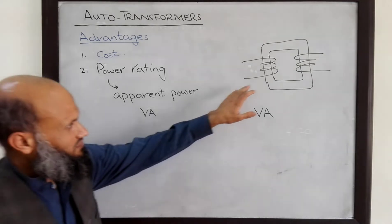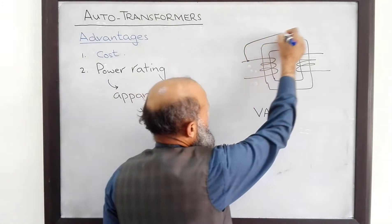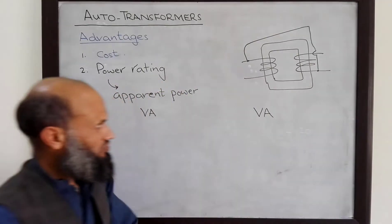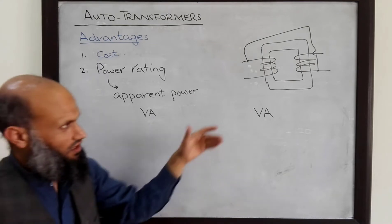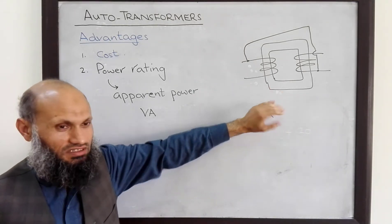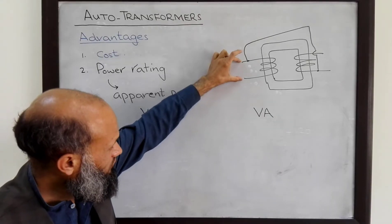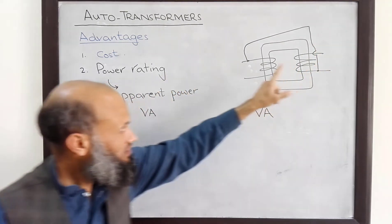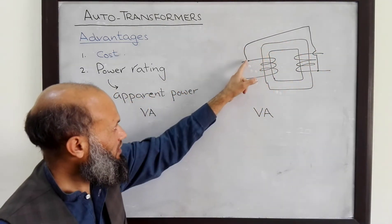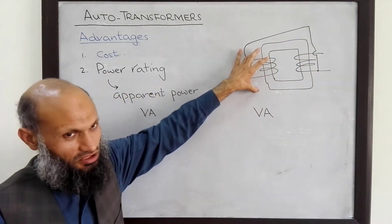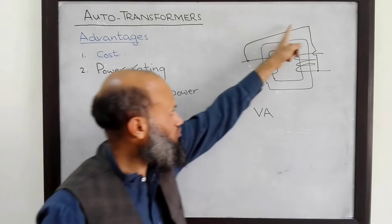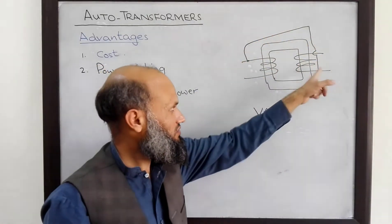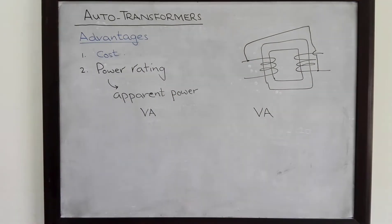If the same transformer is connected in auto transformer configuration, we know that power not only flows through the transformer magnetically, but also through the electrical connection. Therefore, the power rating of the transformer connected in auto transformer configuration is increased. The power which flows from the low voltage side to the high voltage side travels through two paths: the magnetic circuit and the electrical connection. So the maximum power that can be transmitted through the magnetic circuit is limited, but now power flows through two paths, and therefore the power rating is increased. To further elaborate this point, let's discuss it mathematically.